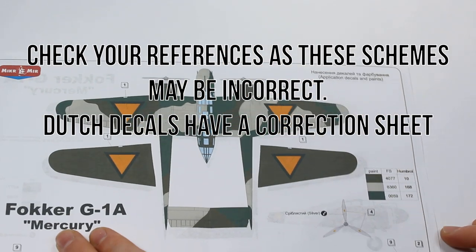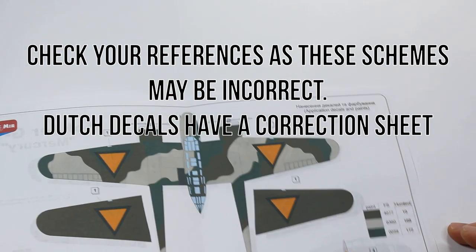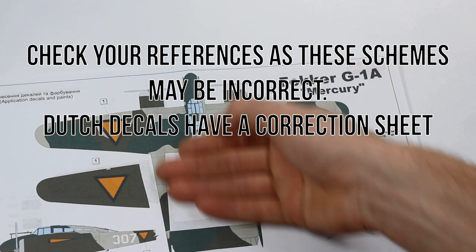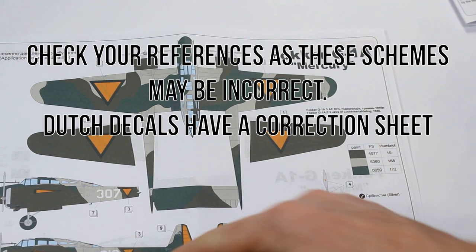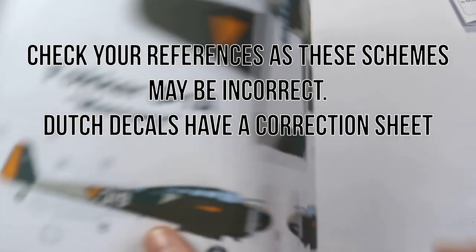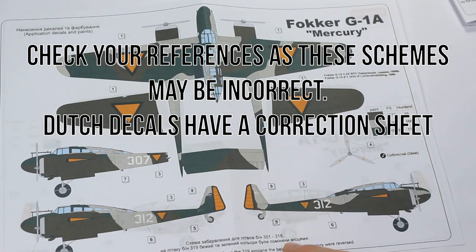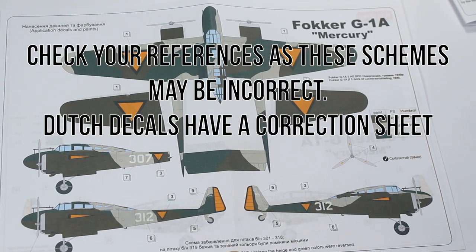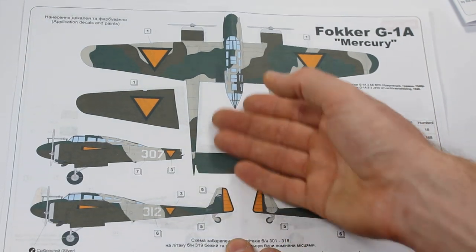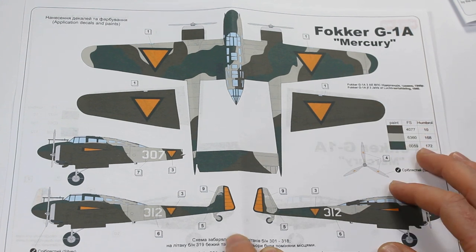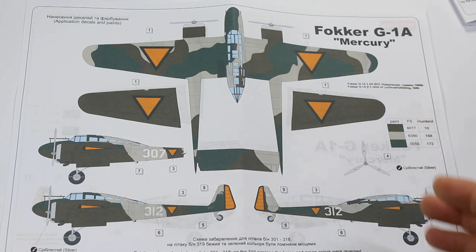Then we've got two schemes included in this one. The schemes we've got are 312, 307, and 319. It just mentions down here that on the 319 scheme, the beige and green colors were reversed, which is something you get sometimes in these marking schemes—they sort of have an A and a B scheme.